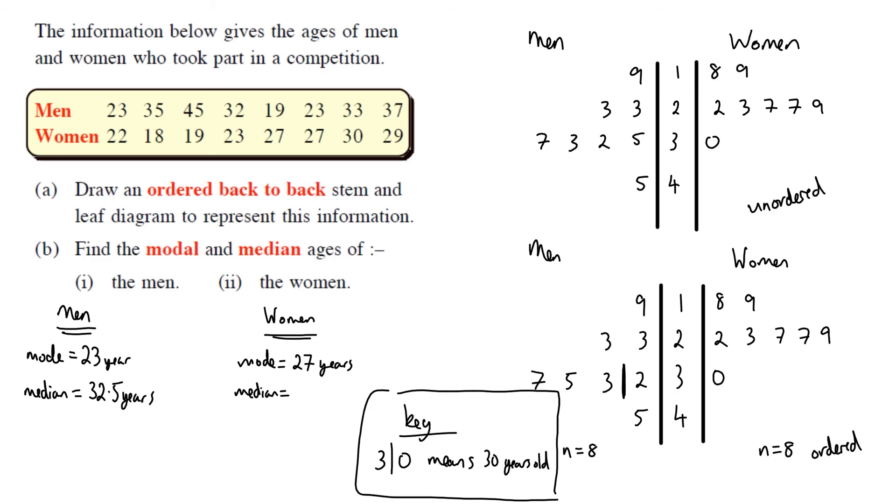The median for the women. So again, four. So one, two, three, four, and then we're working back just to check. So one, two, three, four. Yeah, that's fine. We'll be four numbers in each half. So the women's is halfway between 23 and 27. So it's up to you which way you want to work it out. Add them together and divide by two. That would be 50 divided by two. That's 25. So the median age for the women, 25 years.